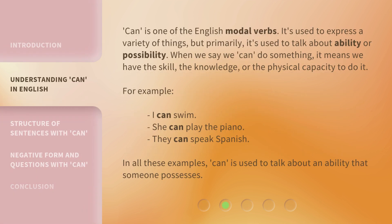Can is one of the English modal verbs. It's used to express a variety of things, but primarily it's used to talk about ability or possibility. When we say we can do something, it means we have the skill, the knowledge, or the physical capacity to do it. For example: I can swim, she can play the piano, they can speak Spanish. In all these examples, can is used to talk about an ability that someone possesses.